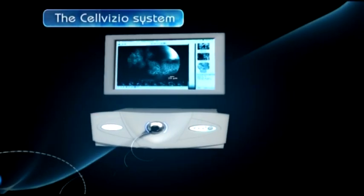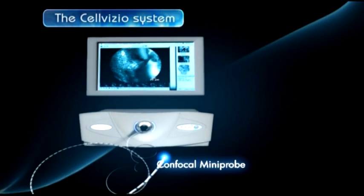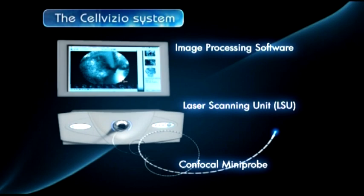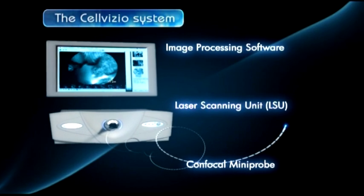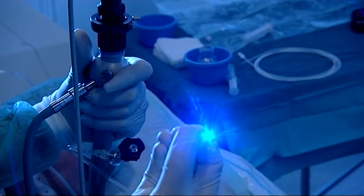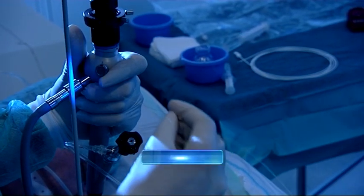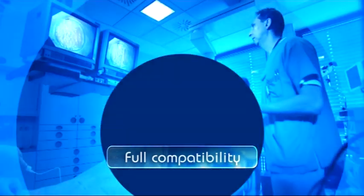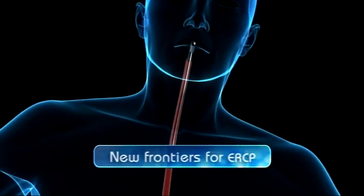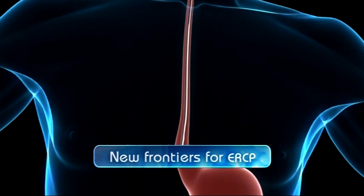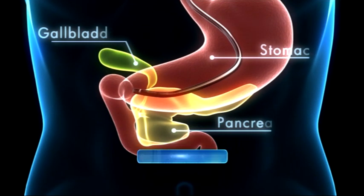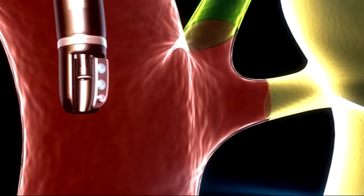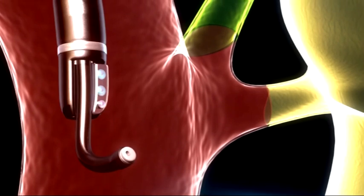Specifically designed to seamlessly integrate into the GI endoscopy workflow, the system consists of the confocal mini probe, laser scanning unit, and sophisticated image processing software. The mini probe is compatible with almost all existing endoscopes.